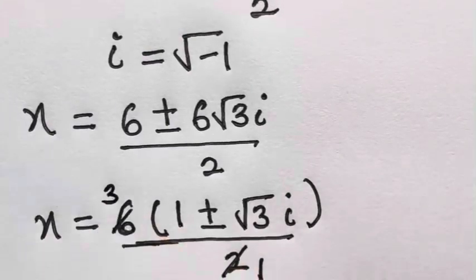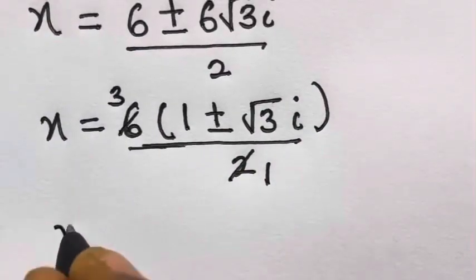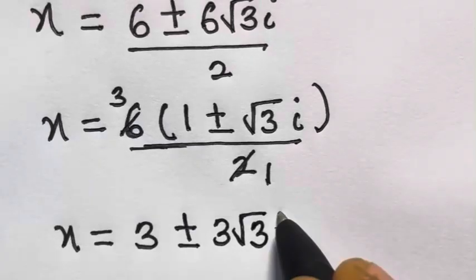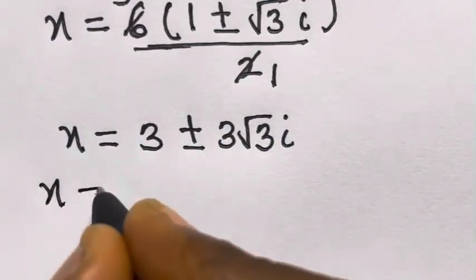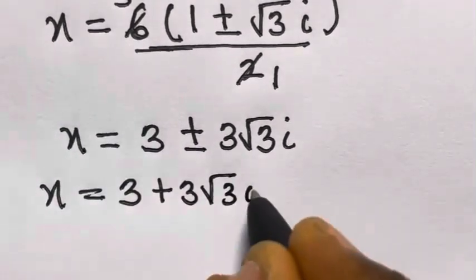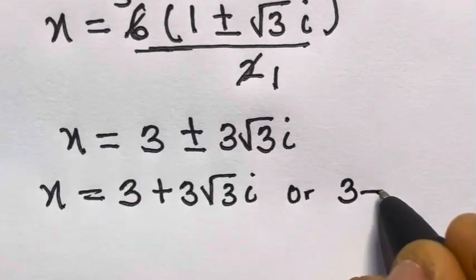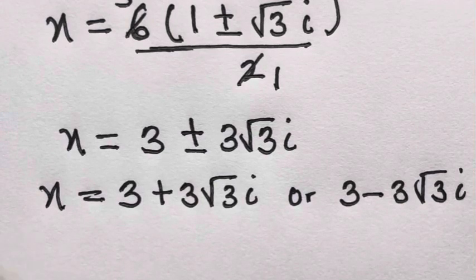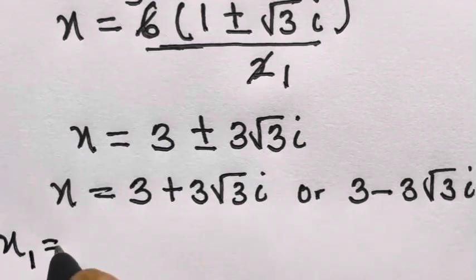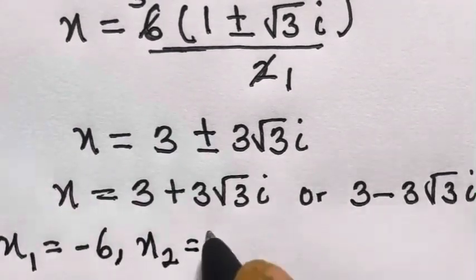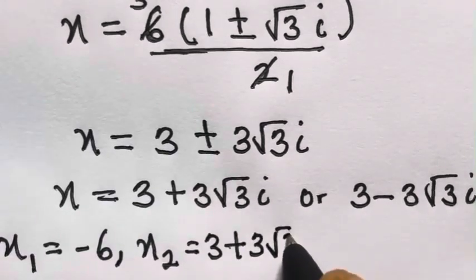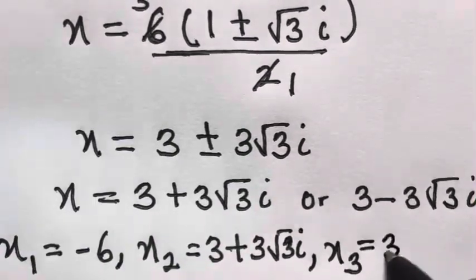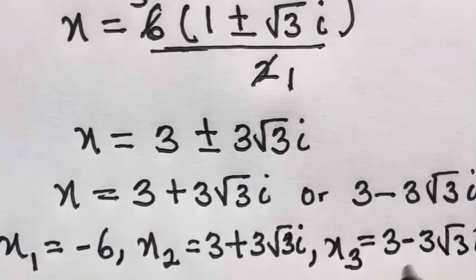Simplifying, we get x equals 3 plus or minus 3 root 3 i. So for case 1, we have x1 equals minus 6, x2 equals 3 plus 3 root 3 i, and x3 equals 3 minus 3 root 3 i.